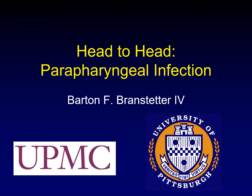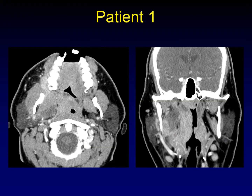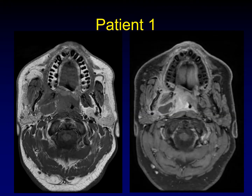In the head-to-head series, I show you images from two different patients with two different diseases that can look similar radiologically. Both of these patients present with acute tonsillitis. Here's patient 1, and you can see a lot of fullness on the right side of the neck. Patient 1 also has an MRI, and you can pause here to have a look at these images and see if you can come up with a specific diagnosis.